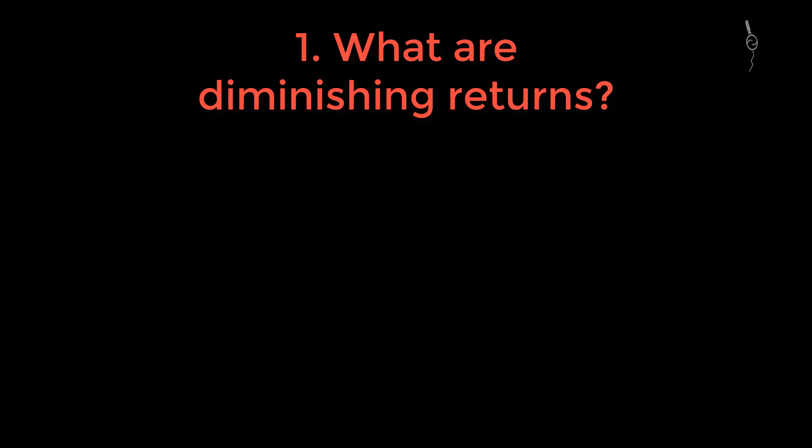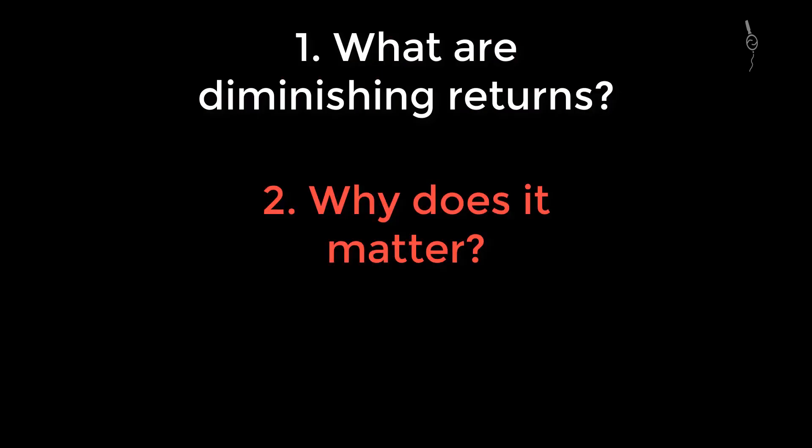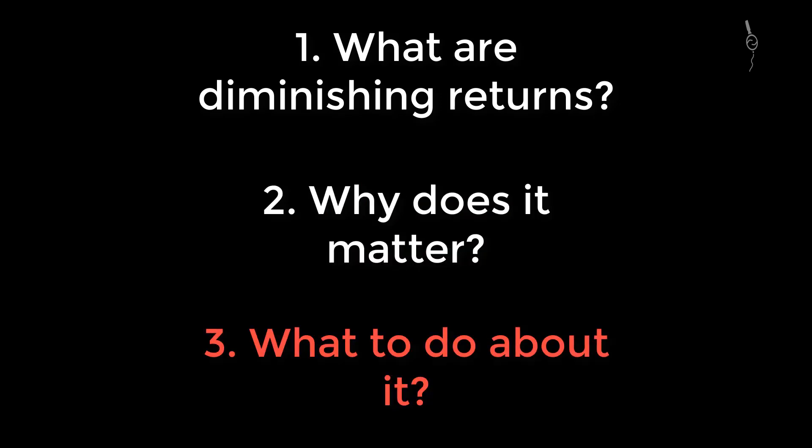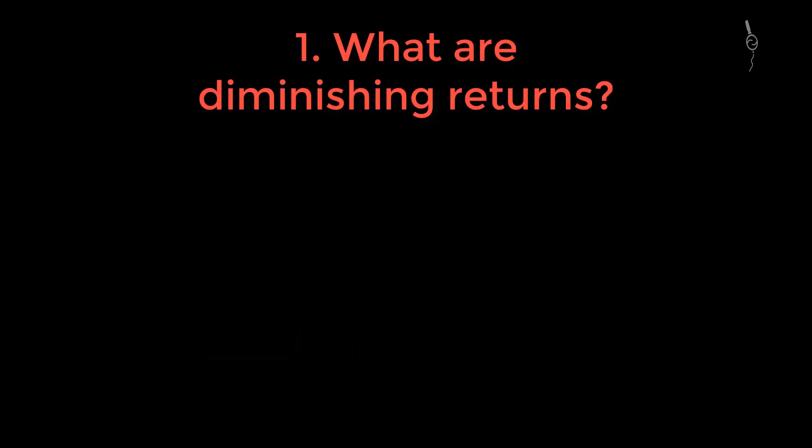First, of course, we need to establish what are diminishing returns, and we do this on a not scientific level, but we're taking graphs to look at those. Then we need to establish why does it matter to know about it, or like, why do diminishing returns matter. And last but not least, what to do about it, because when we've established there is something, of course, we need to do something with it. So, let's get directly into it. What are diminishing returns?